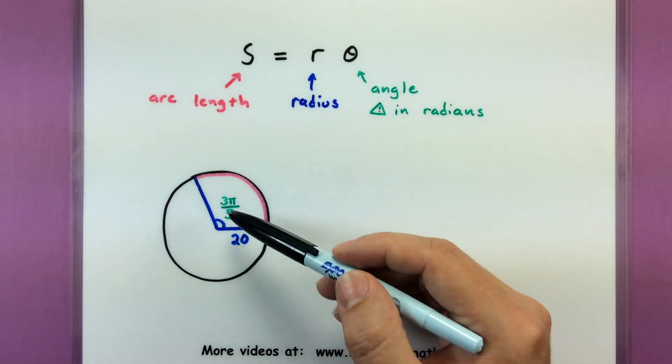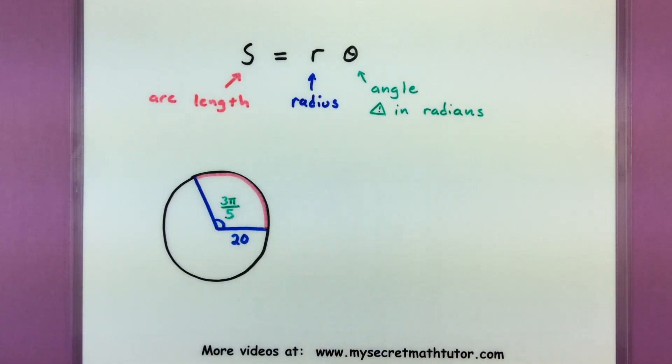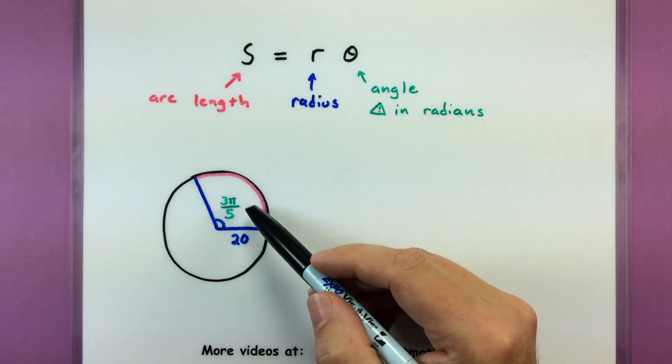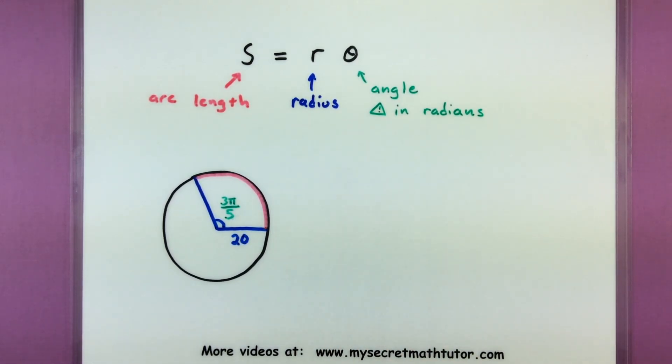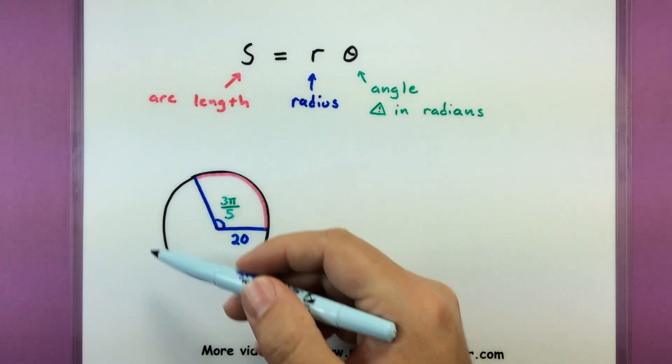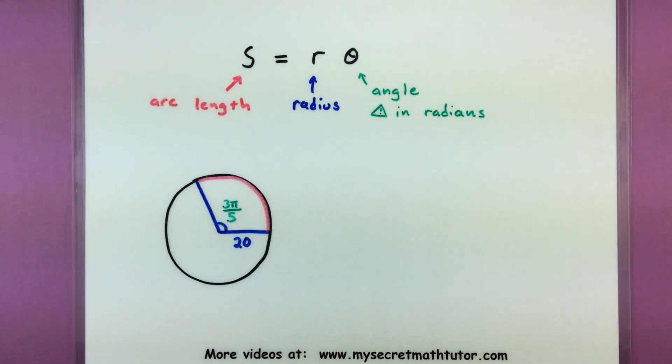This means if you have an angle like 25 degrees or 45 degrees, you want to convert it into radians first and then use the formula. So let's do this quick example I have drawn out here to see how this formula works.